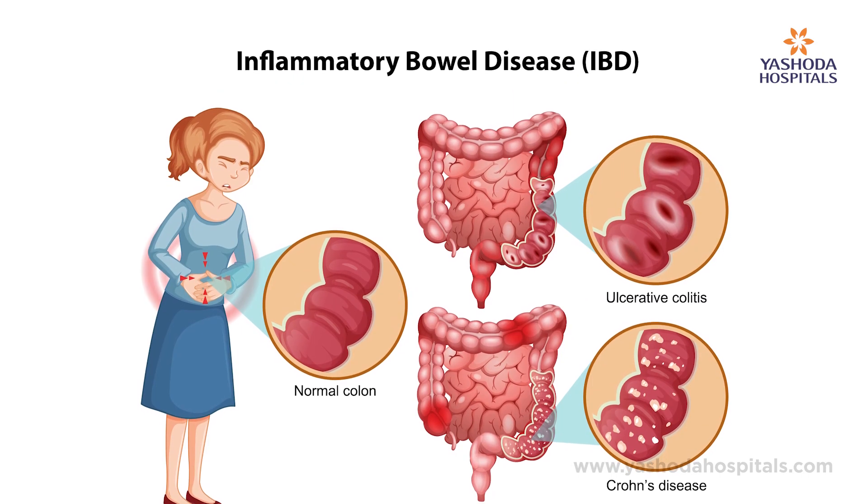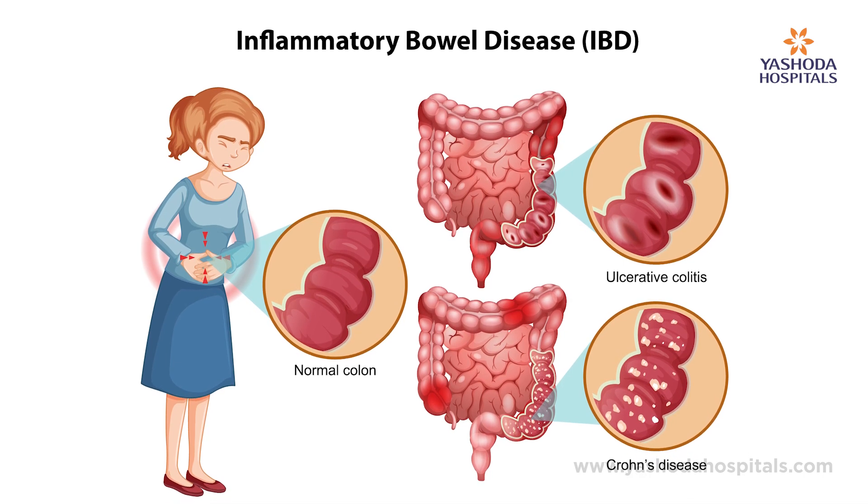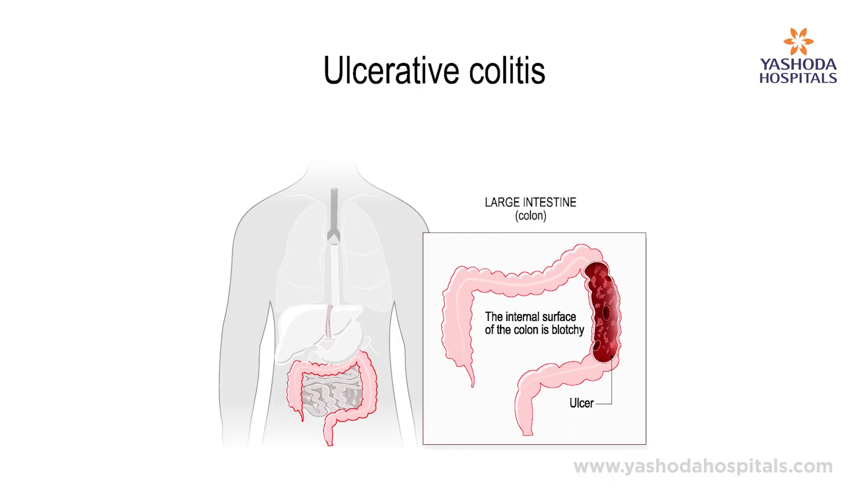IBD is divided into Crohn's disease and ulcerative colitis. First we will talk about ulcerative colitis because it is the most common among these two. Ulcerative colitis presents with a history of pain abdomen, diarrhea, and bloody diarrhea. So any patient who presents with pain abdomen, diarrhea, and bloody diarrhea, we should suspect ulcerative colitis.